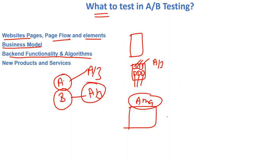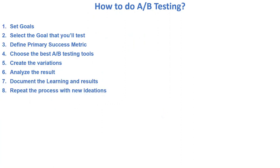We can also test back-end functionality or algorithms. For example, on an Amazon-like website, when a user lands on a product page, we can get user behavior data — how much time they spend on that page, what the click-through rate is, whether they purchase or not. These things can be analyzed using A/B testing. We can also use A/B testing when launching new products or services to improve sales of that particular product.